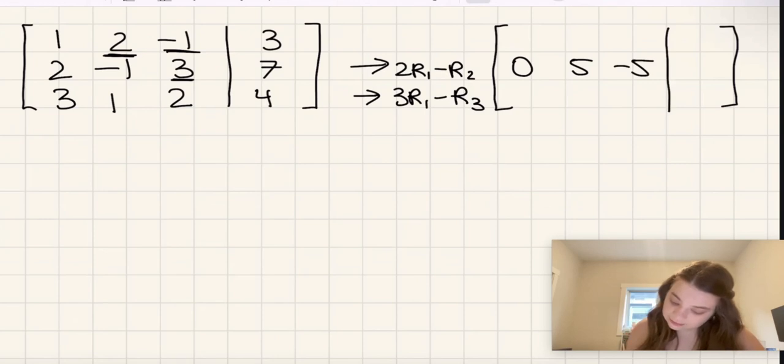And then if we multiply 3 by 2 and then subtract the number in row 2, that's going to be 6 minus 7, which is negative 1. In the first row, we can just keep the same. There we go.